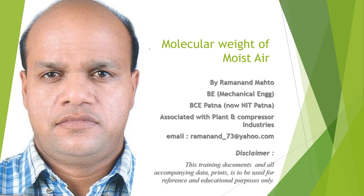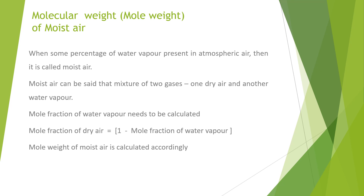Molecular weight of moist air. Moist air means it is a combination of dry air and water vapor. When some percentage of water vapor is present in atmospheric air, it is called moist air. So moist air can be said to be a mixture of two gases: dry air, which is a combination of all gases, and water vapor.